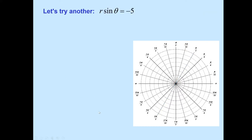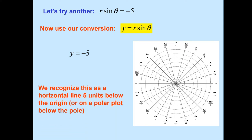Let's try another one: r times sine of theta equals negative 5. We notice that r sine theta is just y. So we have y equals negative 5 — it's just a straight horizontal line at negative 5. We count units from the pole, going down 5 units, because that's negative.